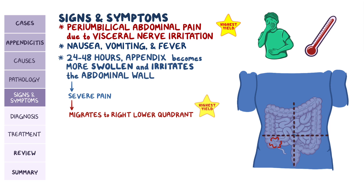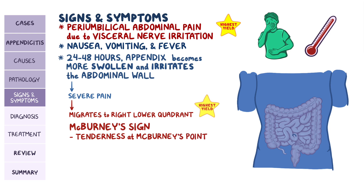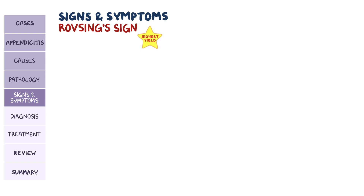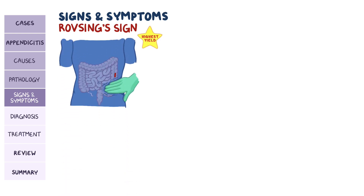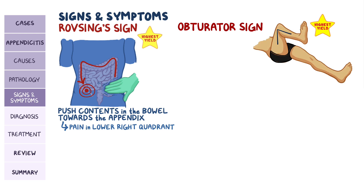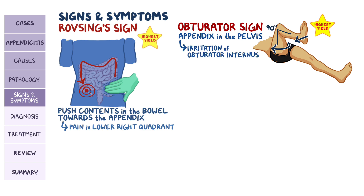It's a good idea to memorize some of the classical signs of this disease. First is McBurney's sign, which is tenderness at McBurney's point, located one-third of the distance from the anterior superior iliac spine to the belly button. Another sign is Rovsing's sign, which is palpation of the left lower quadrant and moving along the path of the large intestine towards the right. This will push the contents in the bowel towards the appendix, further irritating it, causing pain in the right lower quadrant. The obturator sign is when the person flexes the hip and knees to 90 degrees while lying down, and the clinician rotates the hip internally. Since the inflamed appendix lies in the pelvis, it will cause irritation of the obturator internus muscle when this maneuver is performed.